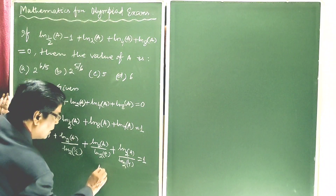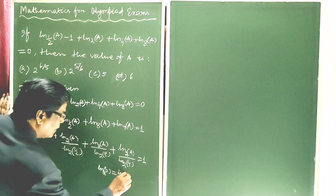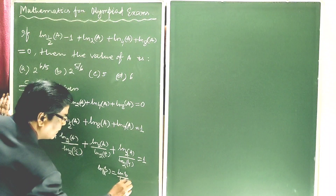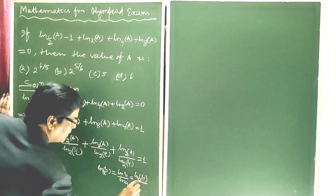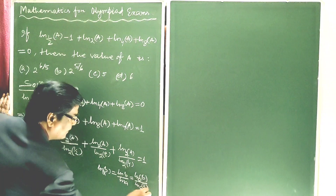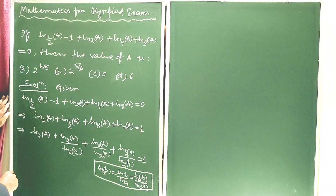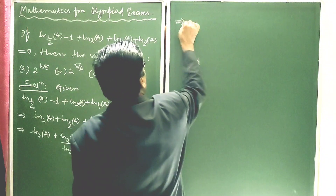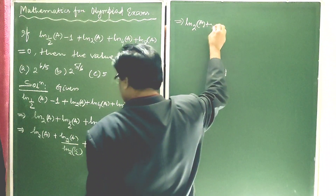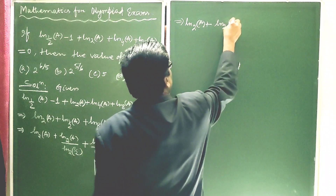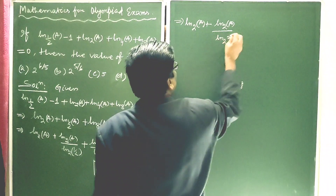So in place of C we have taken 2 here. This is because ln base A of B can be written as ln B divided by ln A. So in place of C we have taken 2. This implies ln base 2 of A plus ln base 2 of A divided by ln base 2 of A.